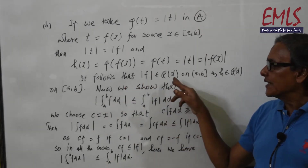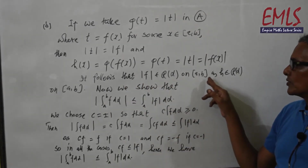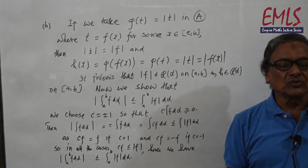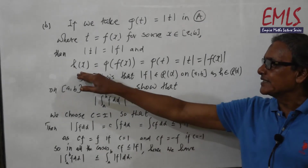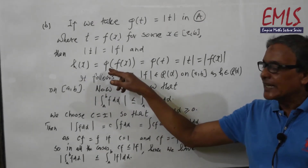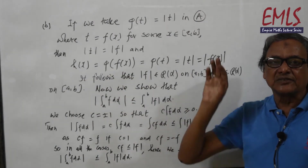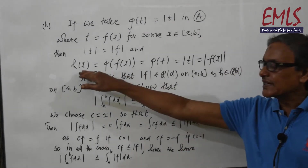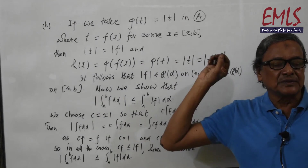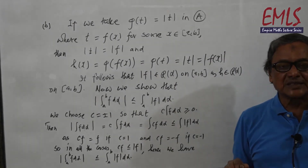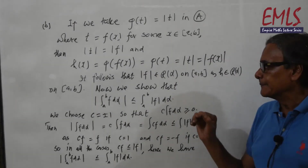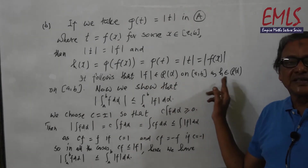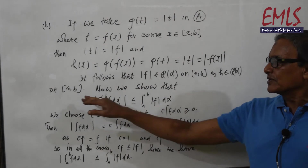It follows that |f| belongs to Rα on [a, b], since h belongs to Rα on [a, b] — because h has been expressed in terms of φ where φ is continuous on [m, M], satisfying all conditions of theorem number 6 from properties part 3.